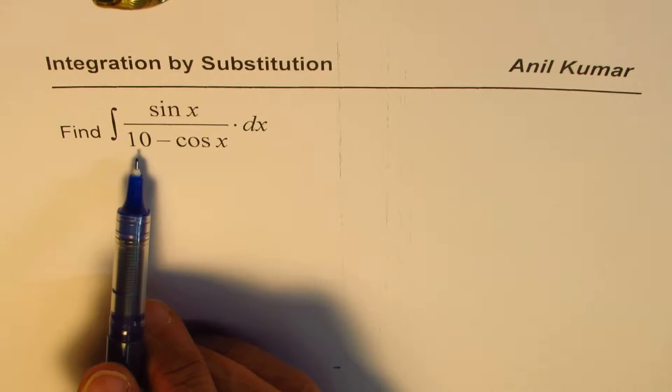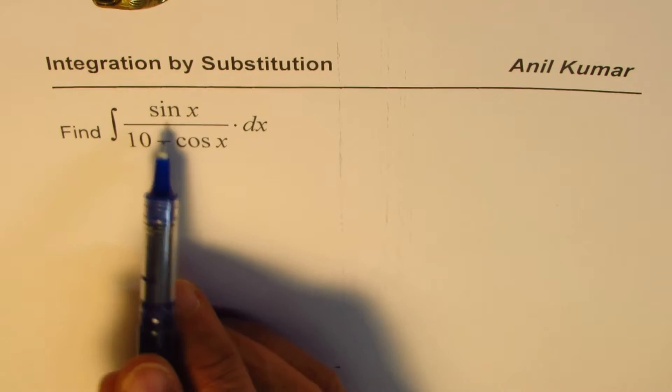In our case, the derivative of 10 minus cos x is sine x, so that should help.